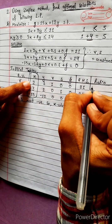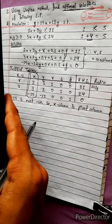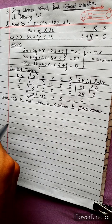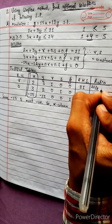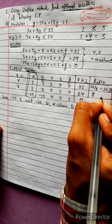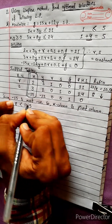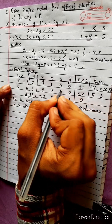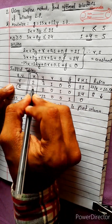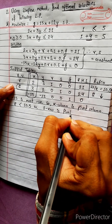Ratios: 24 divided by 3 equals 8, and 21 divided by 2 equals 10.5. Since 8 is less than 10.5, we select the S row. The S row is our pivot row.